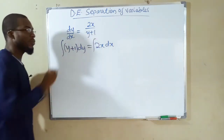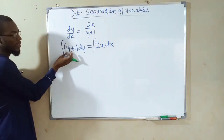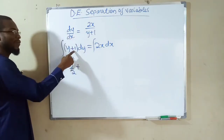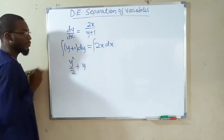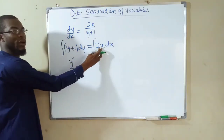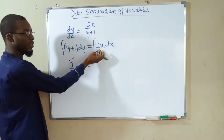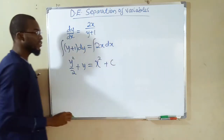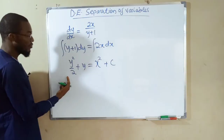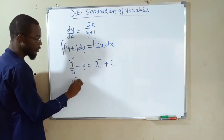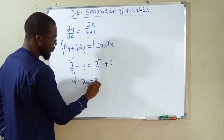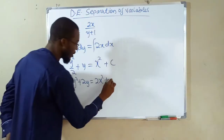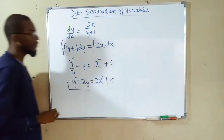We integrate both sides independently. On the left, integrating (y + 1) gives y squared over 2 plus y. On the right, integrating 2x gives x squared plus the constant of integration — since 2 cancels 2. Multiplying through by 2 to clear the fraction, we get y squared plus 2y equals 2x squared plus c. This is the general solution for this differential equation.